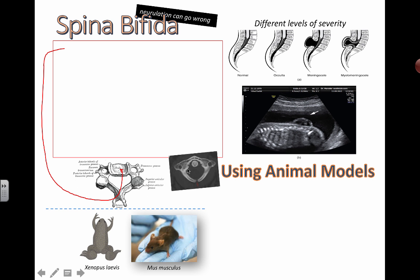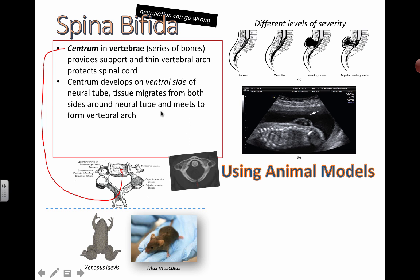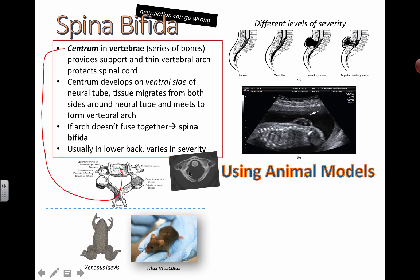You can see in this process — there's a little arrow — the tissue is coming up here and it needs to meet up here in order to form the full arc. And if the arc doesn't actually form properly, you can end up with a gap in it, which can cause the improper formation of the lower back.